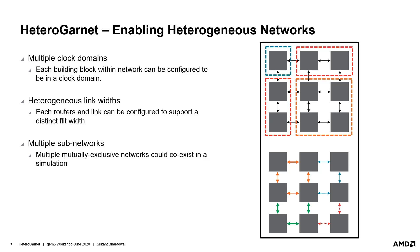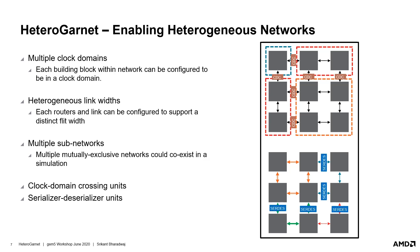Heterogarnet adds two new building blocks: the clock domain crossing unit and the serializer deserializer unit. These units provide the synchronization services at the clock and link width boundaries. These must be explicitly instantiated during configuration by the user, as we will see later in the examples.